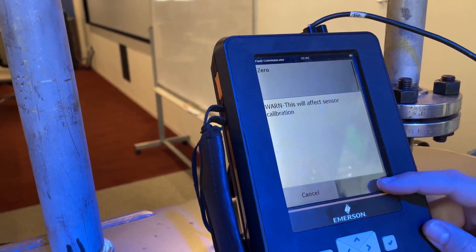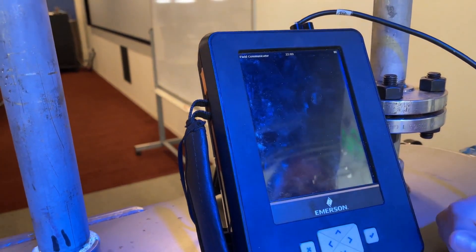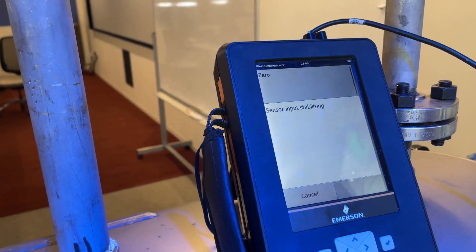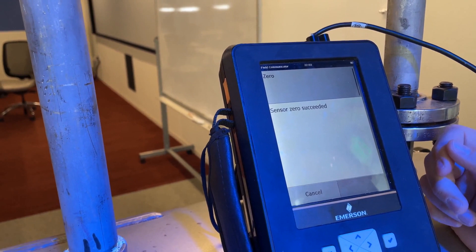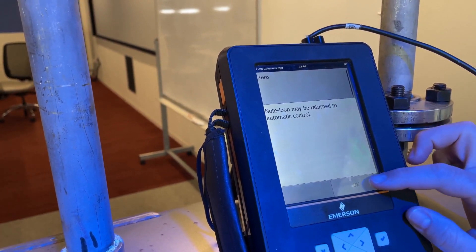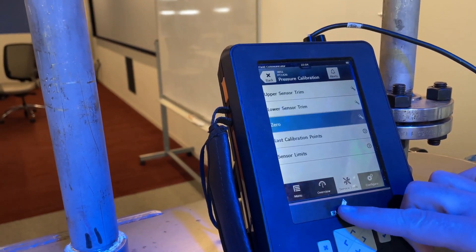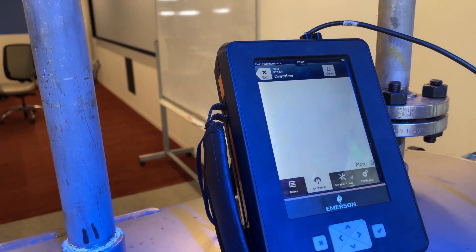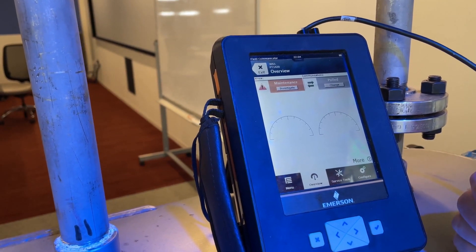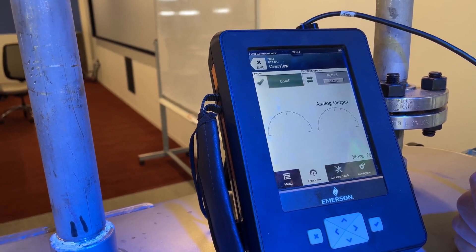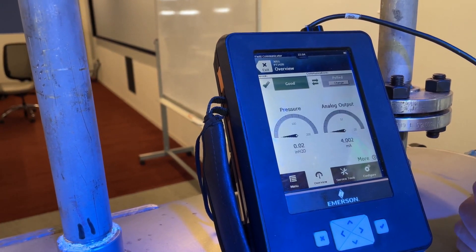Follow the screens by pushing OK. Once it has succeeded, then you can go back to the overview page on the Trex to see that we have now corrected our pressure and our milliamps so that we are ready to run in the process.